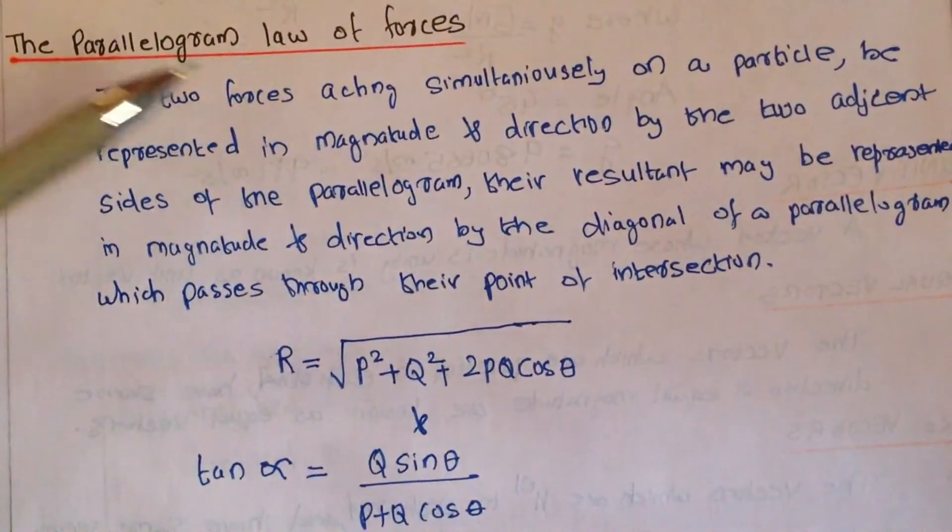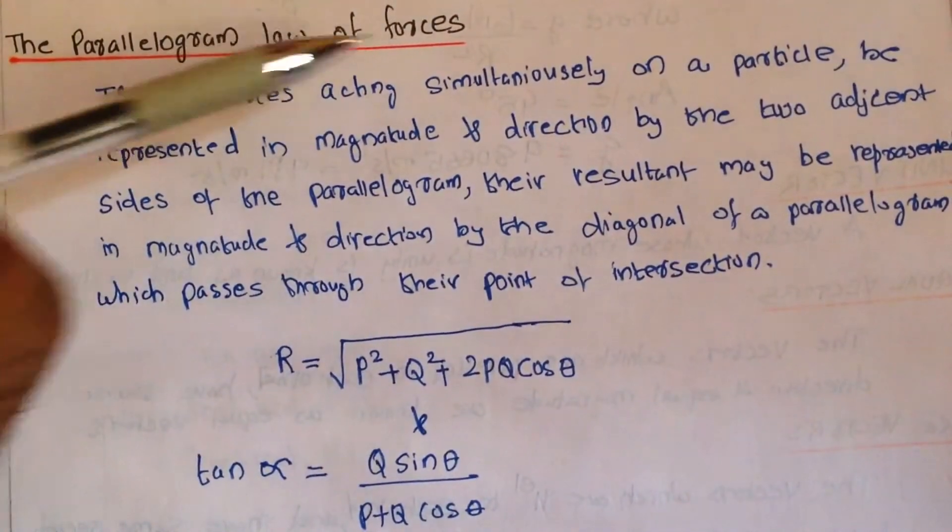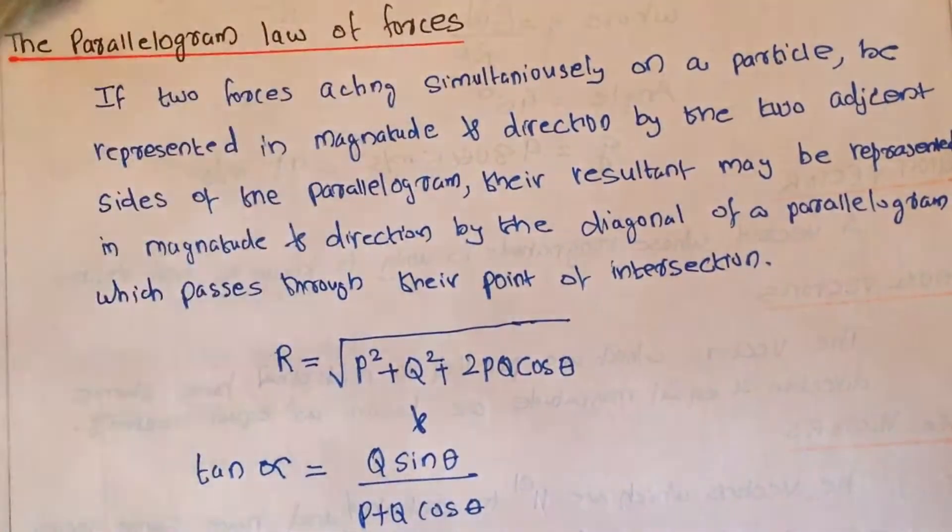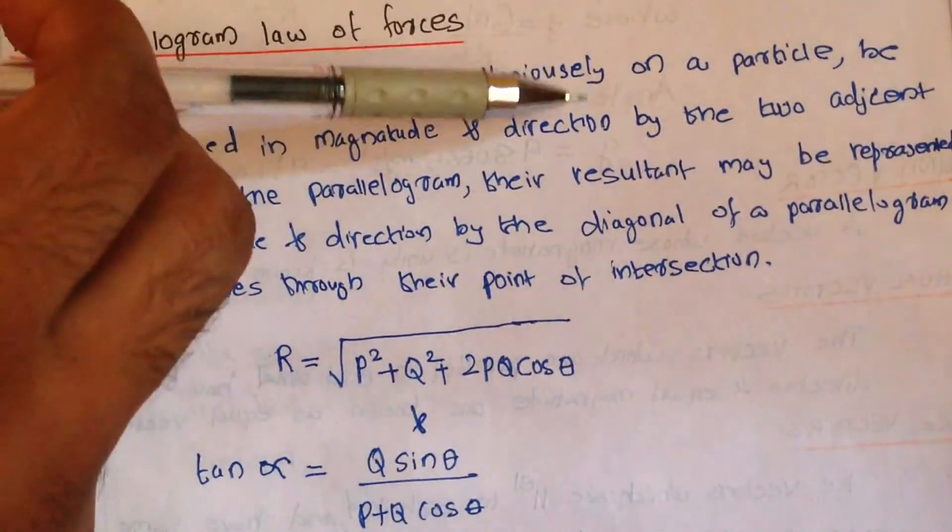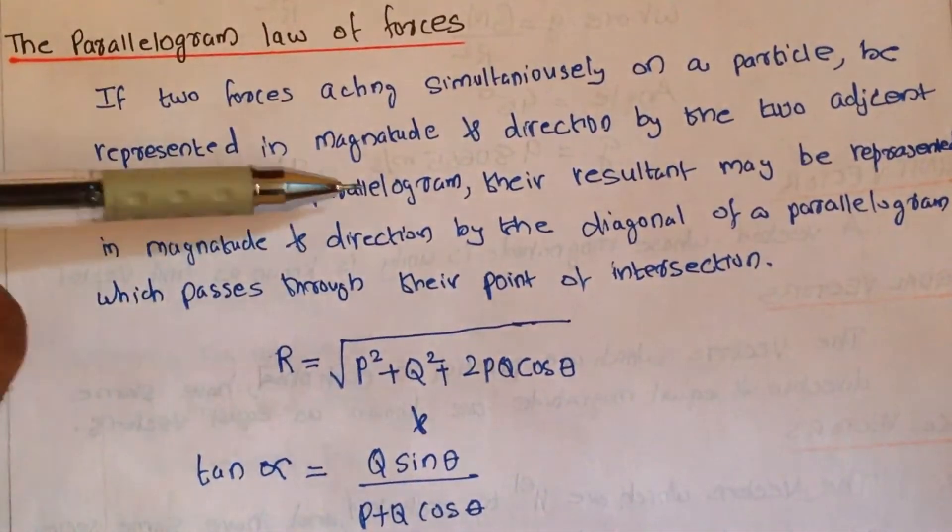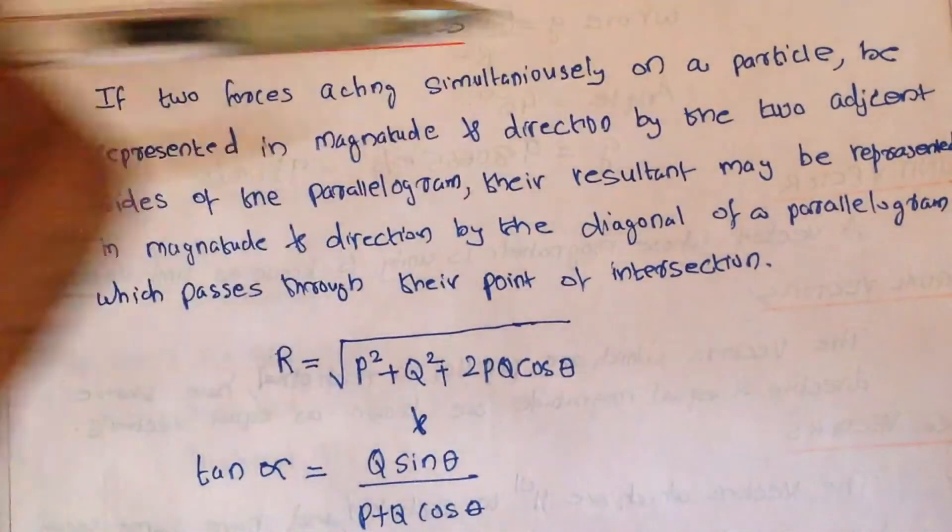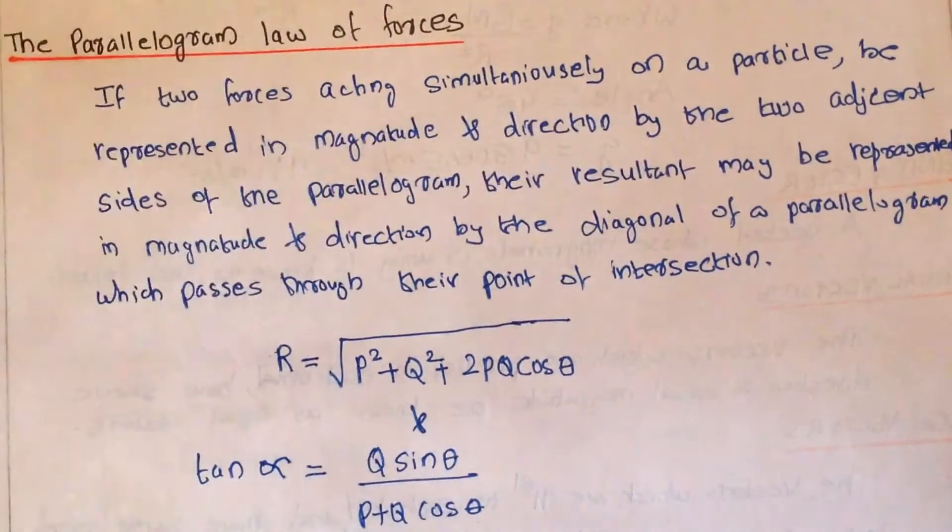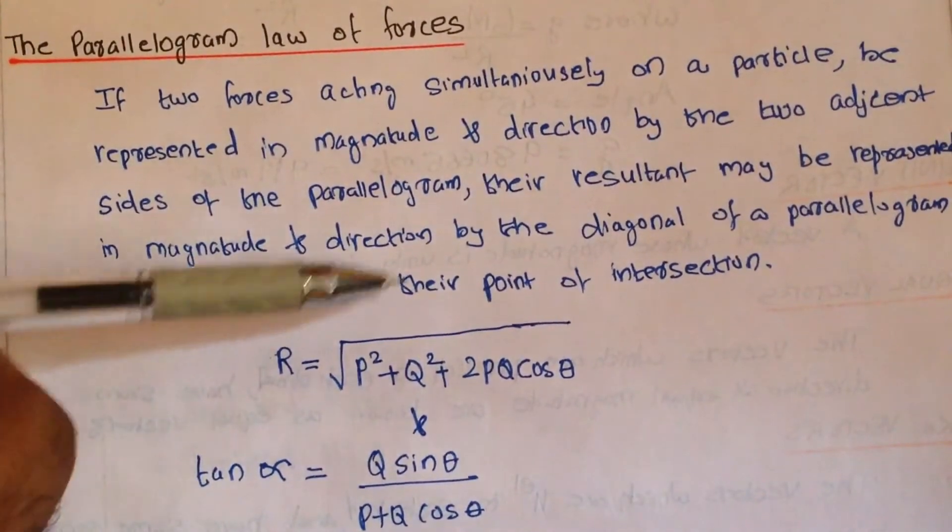So the parallelogram law of forces states that if two forces acting simultaneously on a particle be represented in magnitude and direction by two adjacent sides of a parallelogram, their resultant may be represented in magnitude and direction by the diagonal of a parallelogram, which passes through their point of intersection.